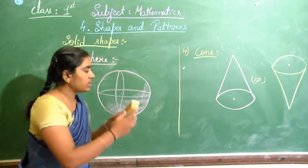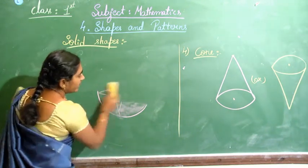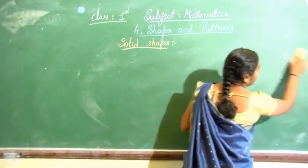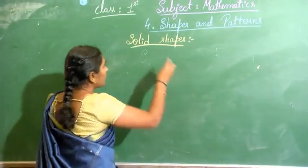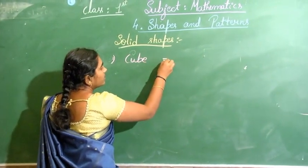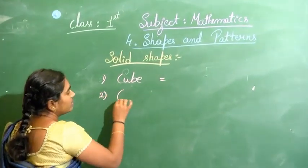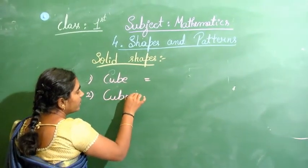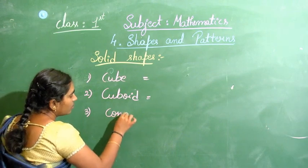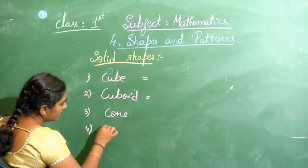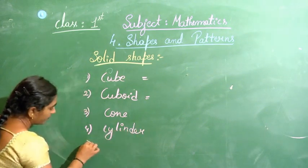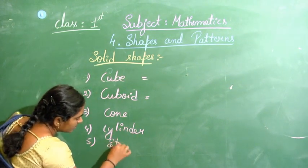These are the five types of solid shapes. Let us write all the shapes together: first is cube, second is cuboid, third is cylinder, fourth is cone, and fifth is sphere.